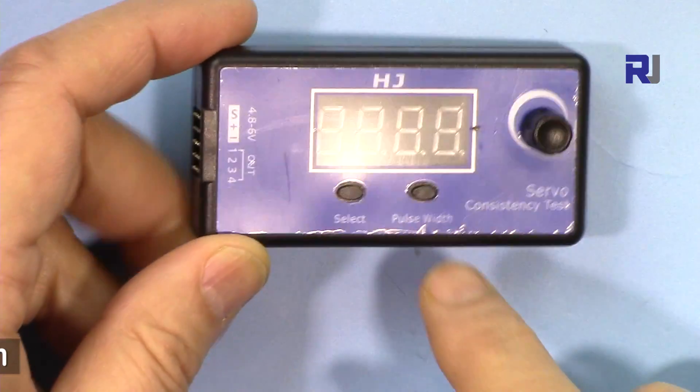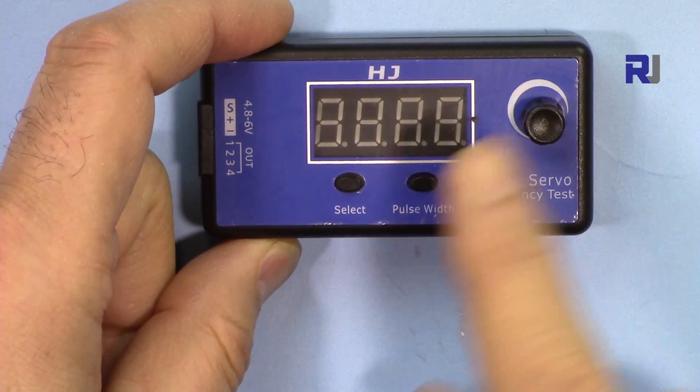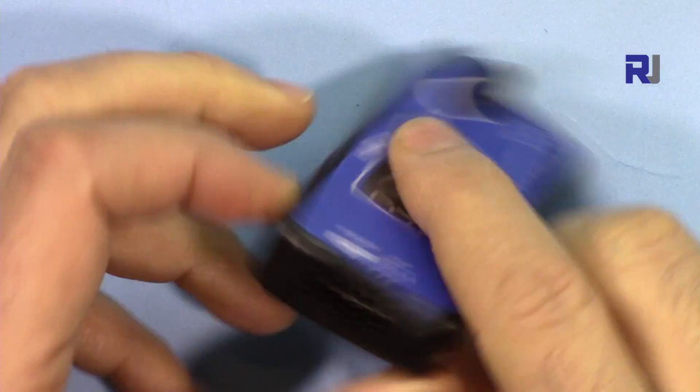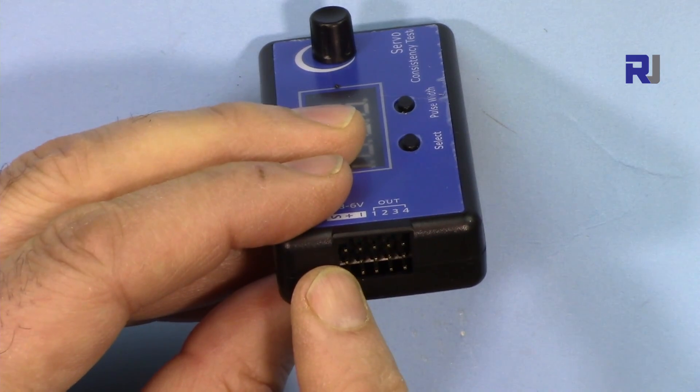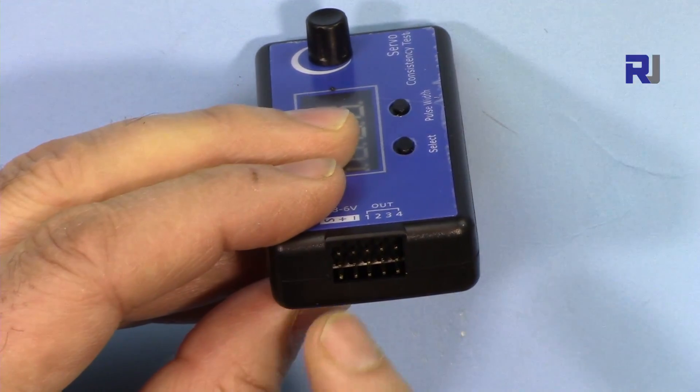This has two switches, one knob, and five connectors. You can connect four servos and one can be used as a power connector if the servo cable doesn't have power.